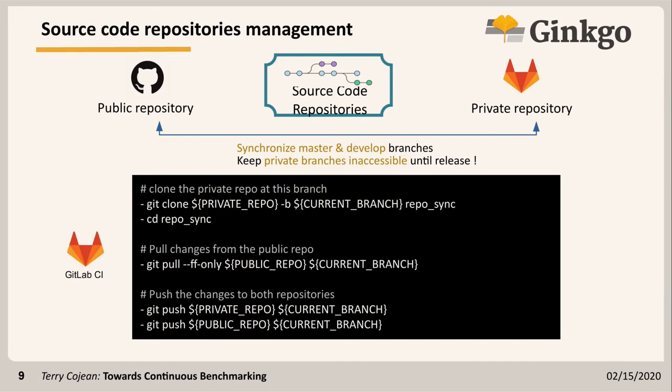For source code repositories, we wanted something where we can have public access to our code but still do private research behind the scenes. We came up with the idea of having two different repositories synchronized via a CI job. We synchronize only the master and develop branches to the public. On the private GitLab repository we can have private branches, which only become available when merged into develop. This is done with a simple CI script that pulls changes from one repository and commits to both.